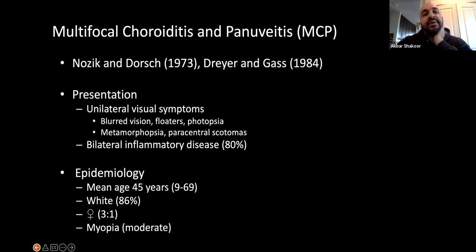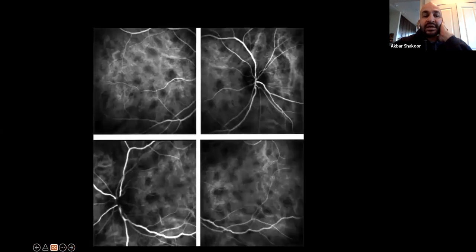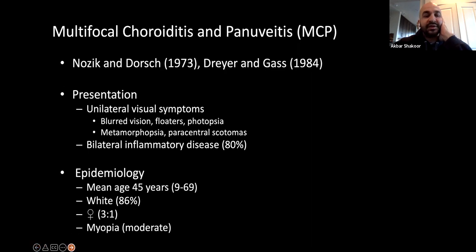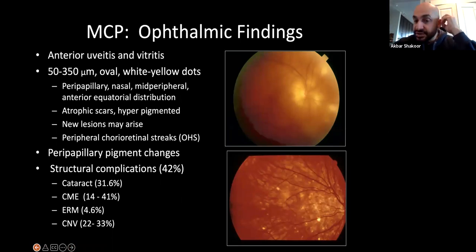Multifocal choroiditis is ultimately bilateral in 80% of patients. It's usually female, white, age 45, and like other white dot syndromes predominates in people with mild or moderate myopia. There's often anterior uveitis and vitritis. The lesions are larger than those seen in MEWDS, variable from 50 to 350 microns. The scars then become atrophic and new lesions may arise — you'll see multiple crops of disease, peripheral peripapillary pigmentary changes around the nerve, and structural complications such as cataracts and CME.